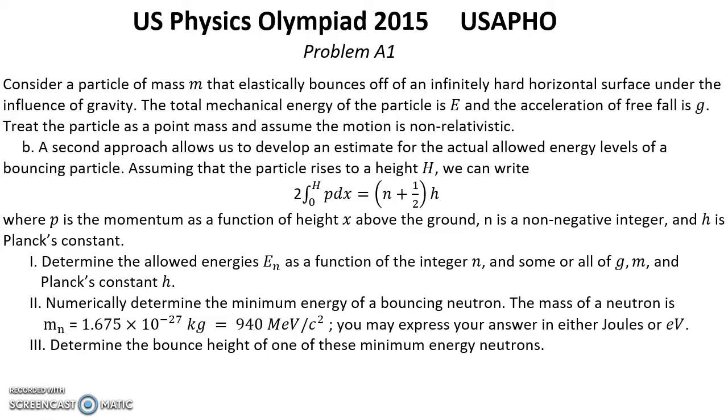Part B. A second approach allows us to develop an estimate for the actual allowed energy levels of a bouncing particle. Assuming that the particle rises to a height H we can write this equation. Where P is the momentum as a function of height X above the ground. N is non-negative integer and H is Planck's constant. First, determine the allowed energies E_N as a function of integer N and sum all of G, M and Planck's constant pH 2.